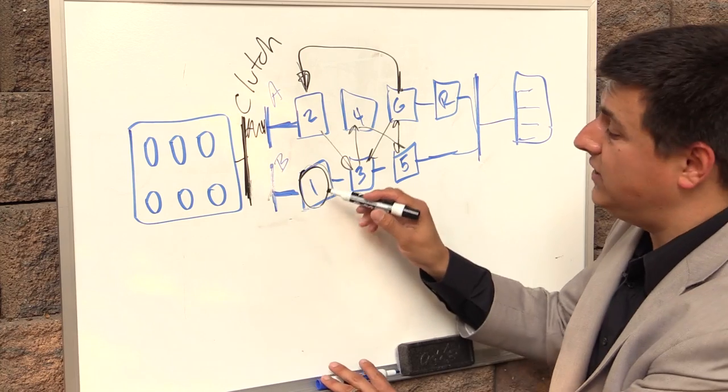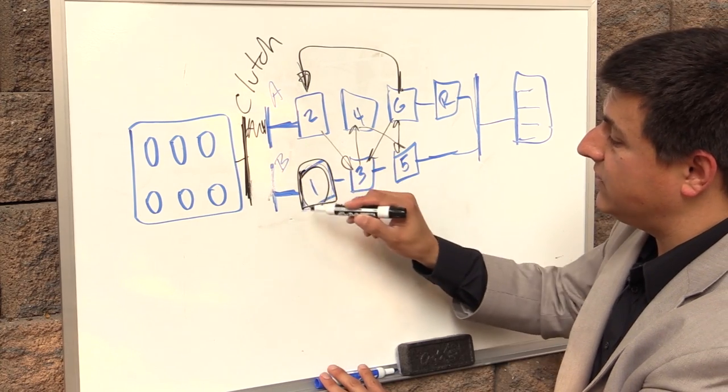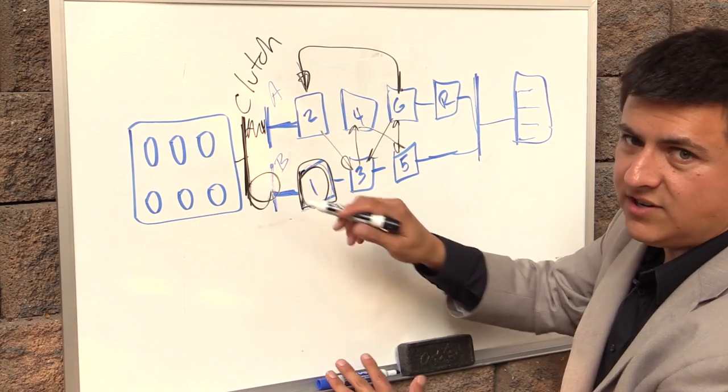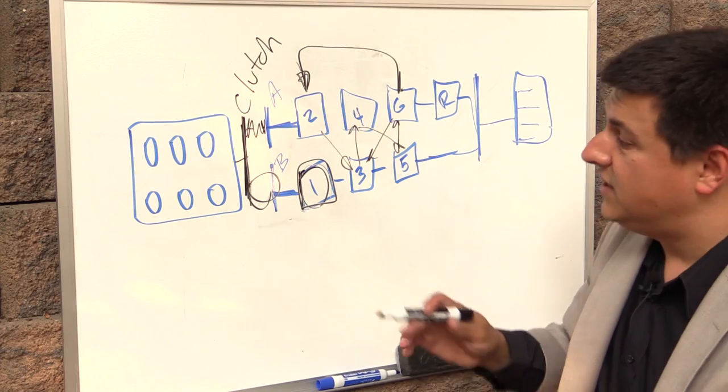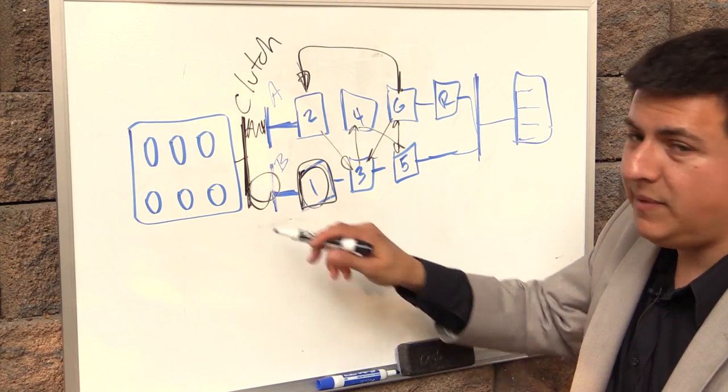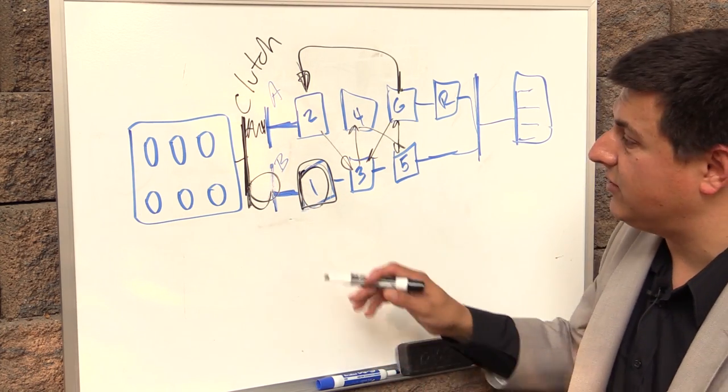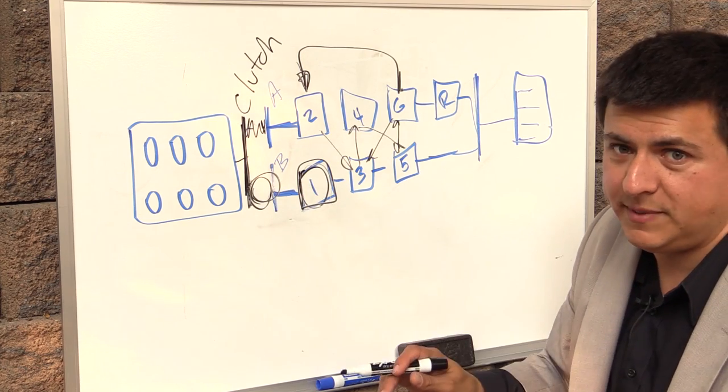If you want to creep along slowly in a dual clutch transmission you engage first gear and then you slip this clutch. Now obviously you don't want to burn out the clutch so the computer is trying to weigh slipping the clutch too much, not engaging it, engaging it fully, etc. to try and keep you along at that creep speed.